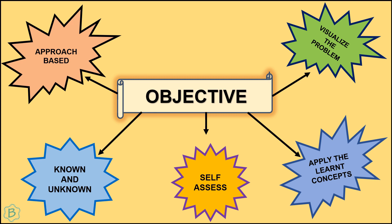Fourth, not knowing the answer to a question is also a good thing — it means you are aware of your gaps. Knowing what you know and knowing what you don't know will help you reduce negative marking. Fifth, you should be able to self-assess: try arriving at the same conclusion using different approaches. This validates your answers and lets you cross-check your work before anyone else assesses your answer sheet.